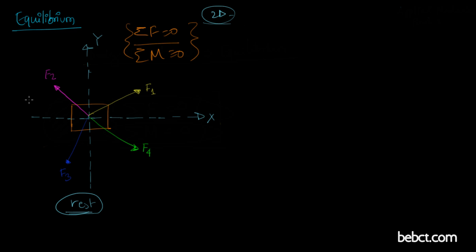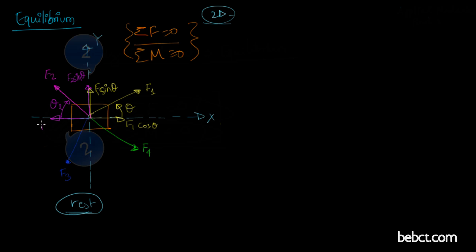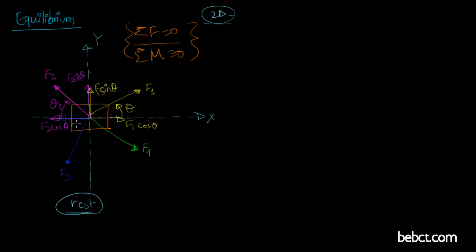F1 makes an angle theta with the x-axis, so along the x-axis F1 has a component F1 cos θ, and along the y-axis it is F1 sin θ. Similarly, if F2 makes angle θ2, it has a component F2 sin θ2 along the y-axis and F2 cos θ2 along the x-axis. F3 making angle θ3 has component F3 cos θ3 along x and F3 sin θ3 downward along y. The same applies for F4, though the diagram gets complex.